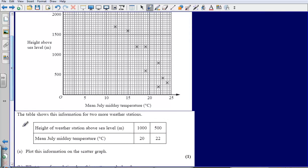Part A tells us that the table shows this information for two more weather stations. Plot this information on the scatter graph. The height of the weather station above sea level was 1000 meters, and the temperature was 20 degrees. So I'm going to go along to find 20 degrees first, and then I need to go up to where 1000 is at the same point. That is going to give me one of my points.